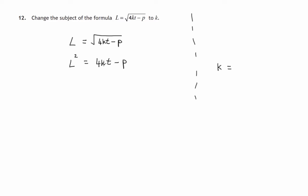Now K is tucked in in this term here, so let's try and get rid of the subtract P. We'll do the opposite - we'll add P to both sides. So we'll have L squared plus P, and then when we add P to the right hand side, this minus P would disappear.